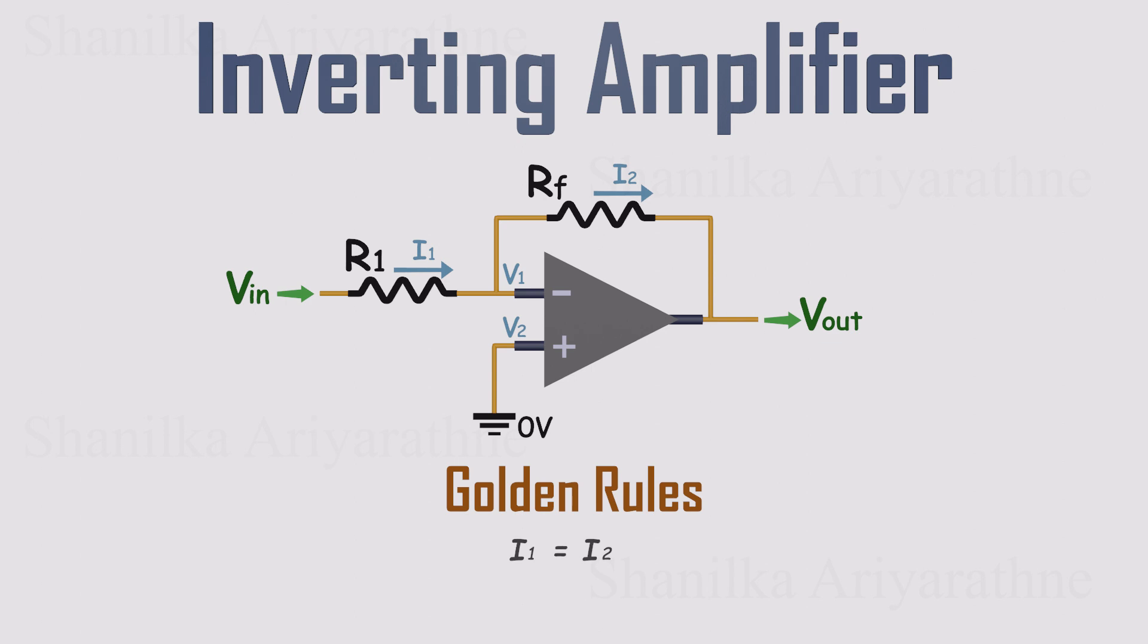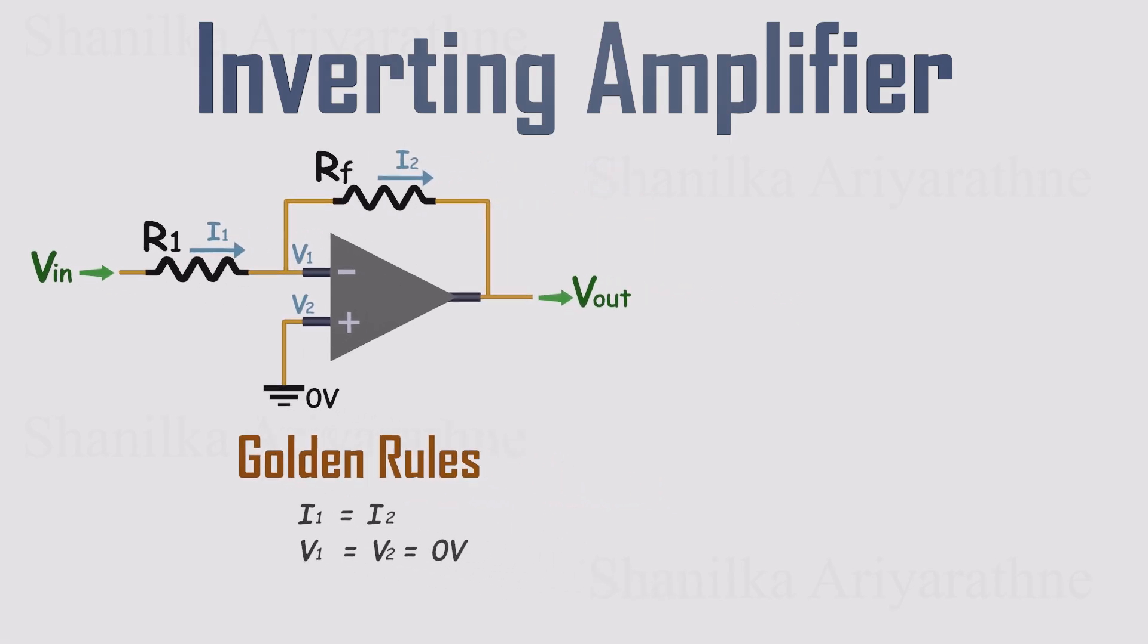Golden rule two: with negative feedback, the op-amp keeps the inverting input at the same voltage as the non-inverting input. Since the non-inverting input is grounded, the inverting input is held at what we call virtual ground, essentially zero volts. These two relationships make the math pretty simple. The current through R1 is equal to the current through Rf, and by Ohm's law, current is just voltage divided by resistance. The voltage across R1 is Vin minus V1, and the voltage across Rf is V1 minus Vout. But from the second golden rule, we know V1 equals zero, since the inverting input is at virtual ground.